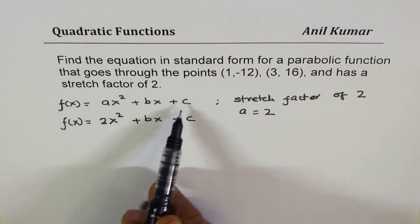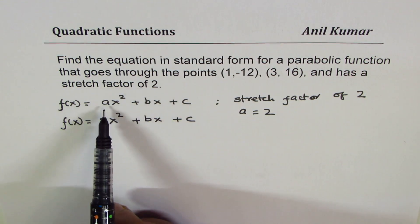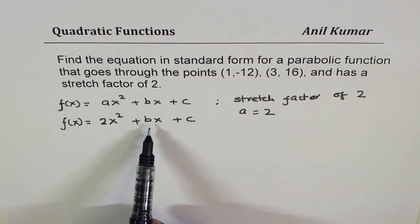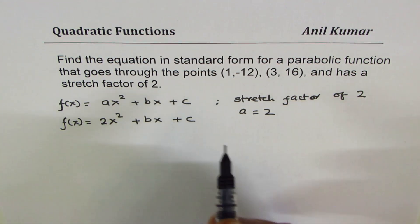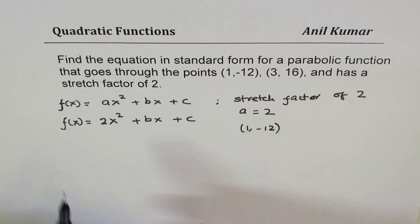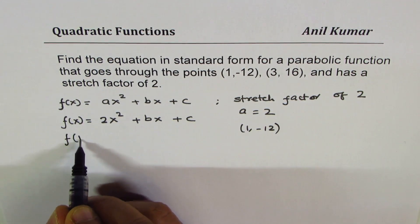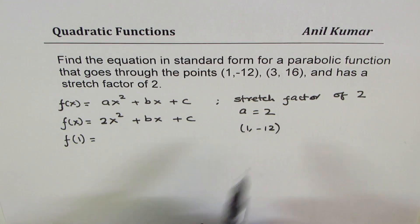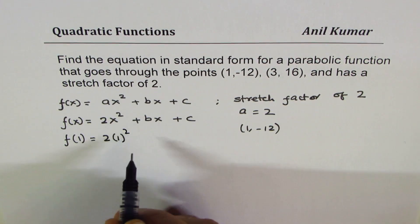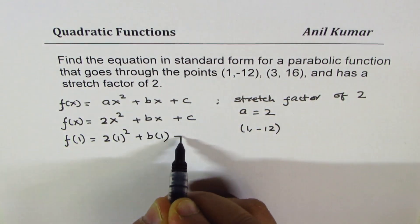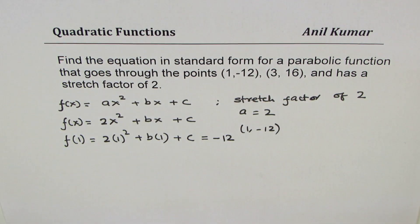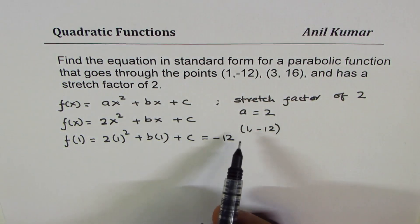There are actually three unknowns. From the stretch factor, we know the value of a. From the two given points, we can get two equations and solve for b and c. Let's use the first point (1, -12). It really means that if I replace x with 1, I should get -12. So replacing x with 1, we get 2 times 1 squared plus b times 1 plus c equals -12.